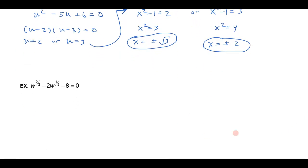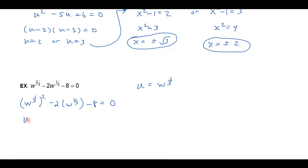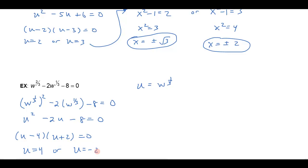Let's do one more like this. This one looks very interesting because it has fractional exponents. But notice if I rewrite this as w to the one-third, squared, minus 2 times that same w to the one-third, minus 8 equals 0, then it kind of looks like a quadratic equation. In fact, we'd say this is quadratic in w to the one-third. So I'm going to make a substitution: let u be w to the one-third. So this is really u squared minus 2u minus 8 equals 0. I'll factor that as u minus 4 times u plus 2. So I get u is equal to 4 or u is equal to negative 2. Again, I don't want u — I want w, so let's re-substitute.